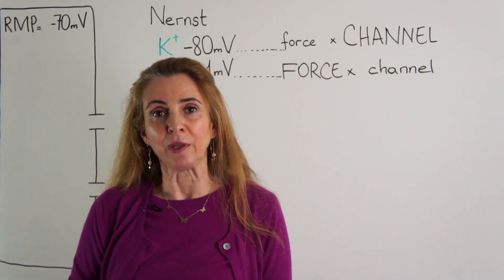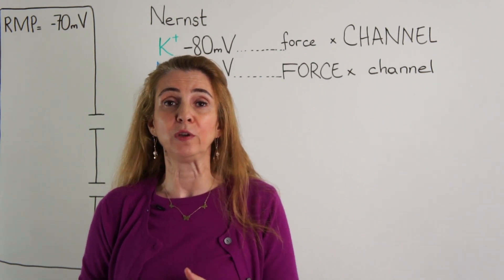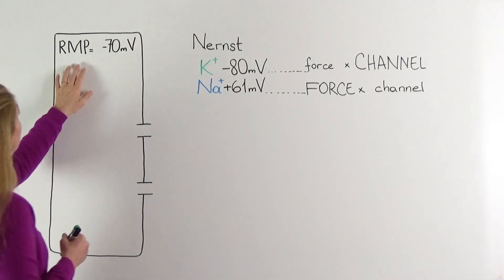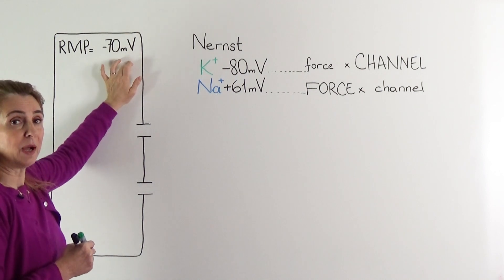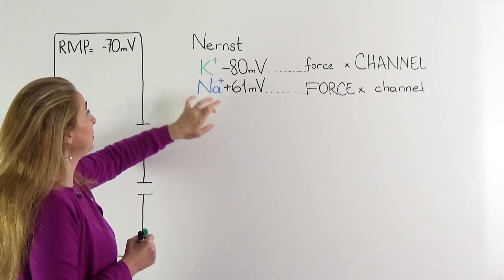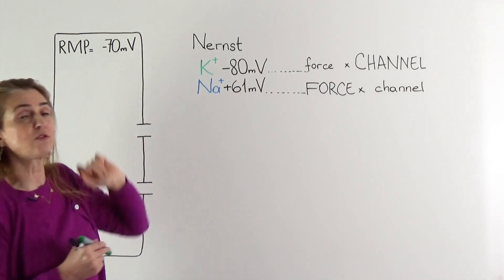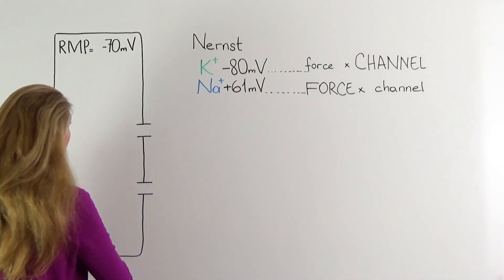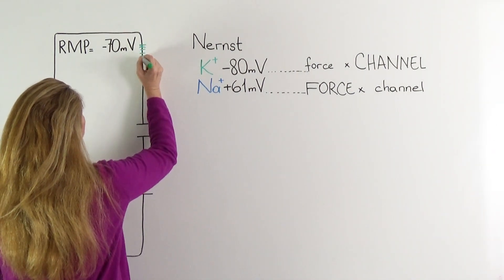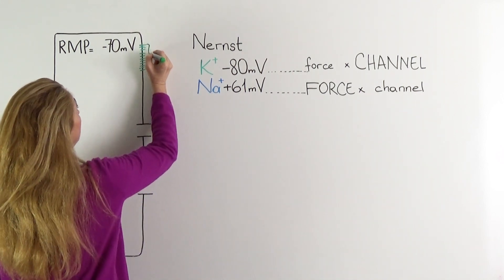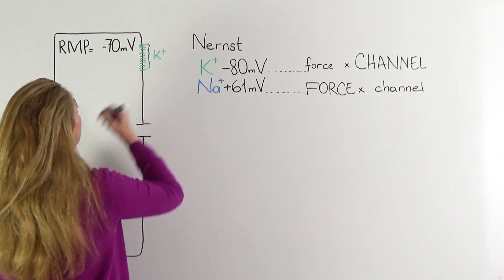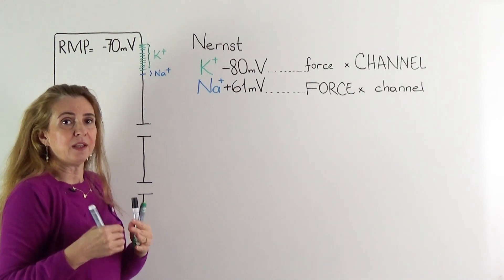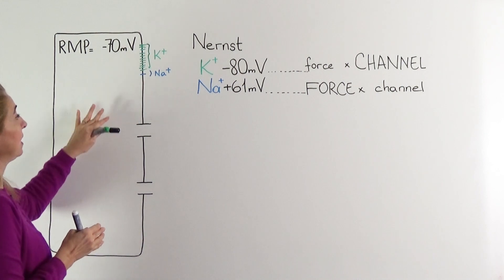Let us examine how opening and closing of the channels work together with the two driving forces to produce different types of membrane potentials in this figure. Here is a nerve cell with a resting membrane potential of minus 70 millivolts. The Nernst potential of potassium in a cell like this is minus 80, and the Nernst potential of sodium is plus 61. We know — we have already learned this in the resting membrane potential video — that in this cell membrane there are a lot of leak channels for potassium and very few leak channels for the sodium ion.